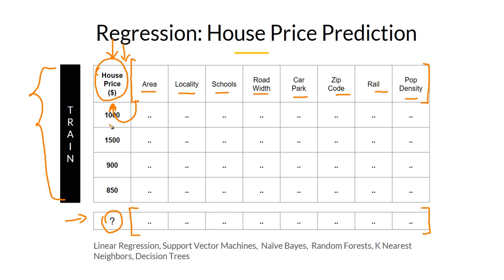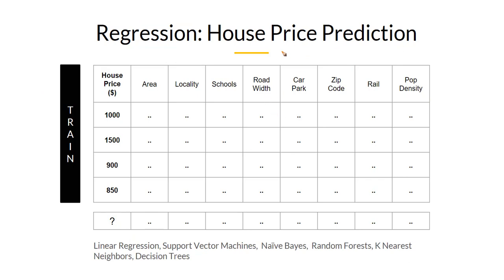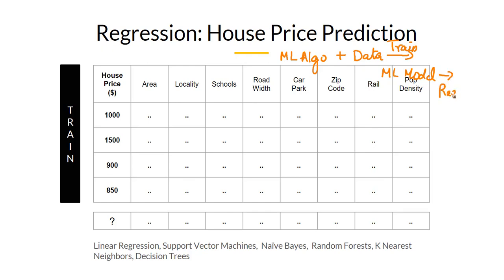Since the price is a numeric quantity, we call this regression. The trained machine learning model that does the prediction is called the regressor. To make it clear: you have an ML algorithm and data, and once trained you get an ML model. When your problem is a regression problem, this ML model is also called a regressor. This is the terminology.